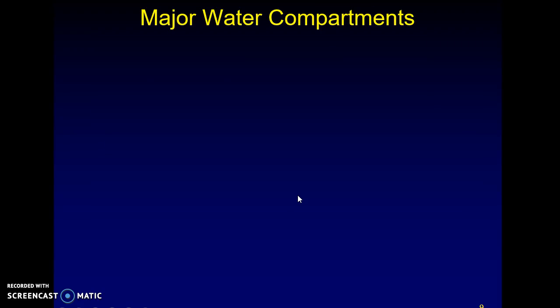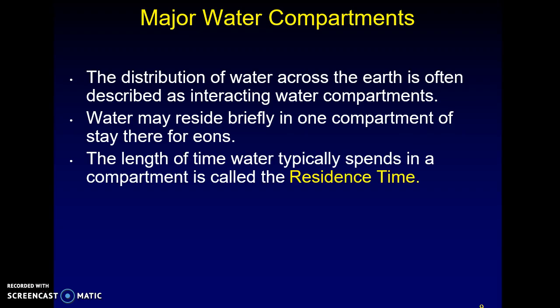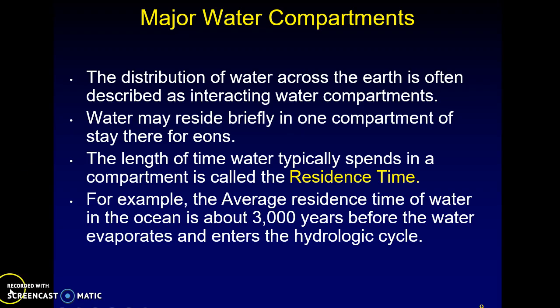The most important concept here is residence time — how long water stays in a particular water body or major compartment. In the ocean it's about 3,000 years. In aquifers and groundwater, residence time ranges from 4.4 million years from the Pleistocene era to as young as 20,000 years. The groundwater residence time is much greater, which is why any contamination of groundwater is a larger and more persistent problem than ocean contamination.